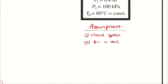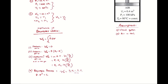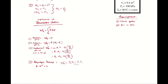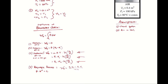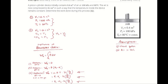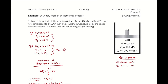Now that the air is ideal, I can use the simplification of boundary work for an isothermal process of an ideal gas. There are multiple equivalent forms I could use — it's just a matter of which one requires the least effort to apply, and I don't want to do any more math than I have to. Since I have P1 and V1 already, I might as well use that form.